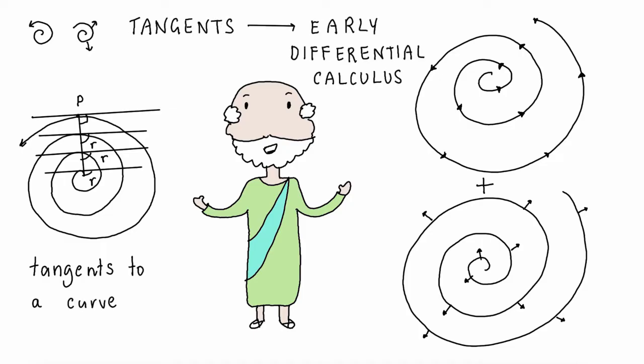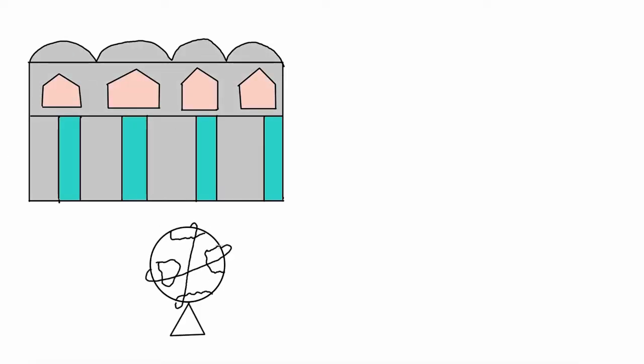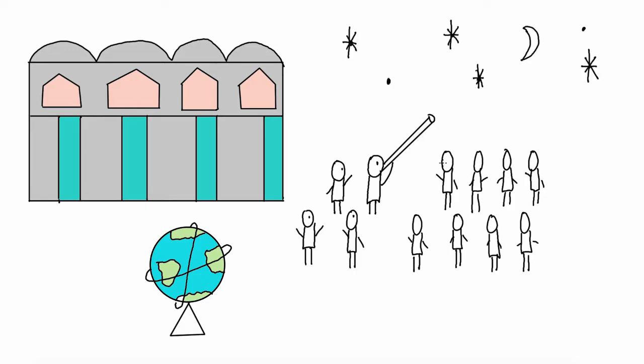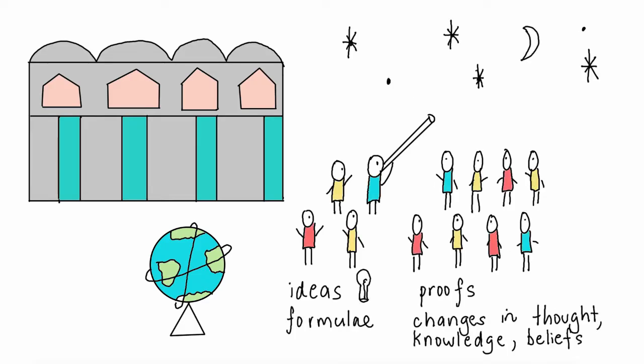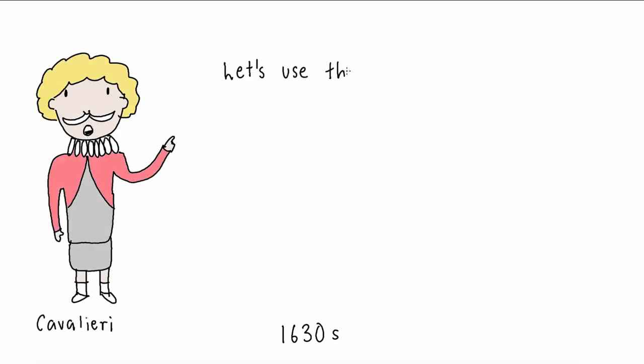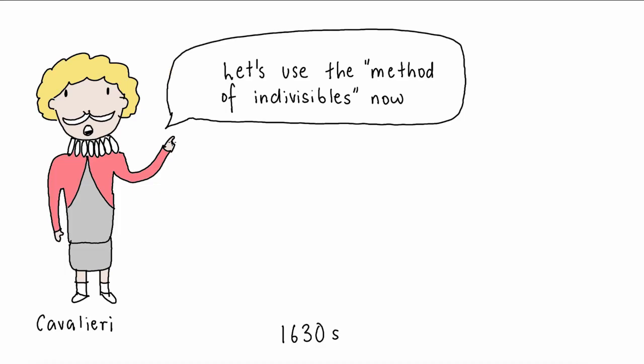Moving on now from ancient mathematics and fast forwarding to the 17th century, often called the century of the scientific revolution, many great mathematical ideas, formulas, and proofs were discovered. Cavalieri developed a method of indivisibles in the 1630s, which was a more modern version of the method of exhaustion by Archimedes and an early step towards integral calculus.